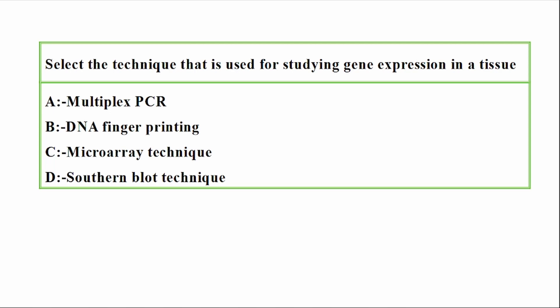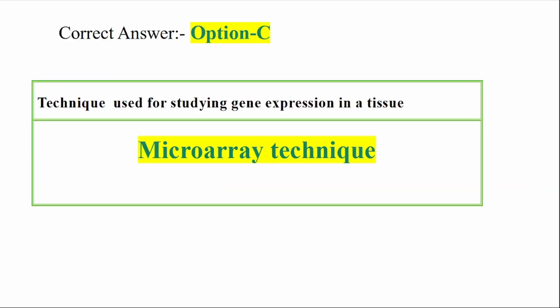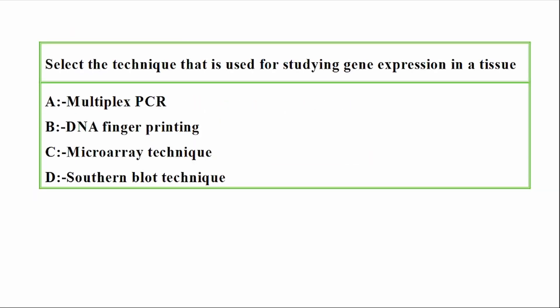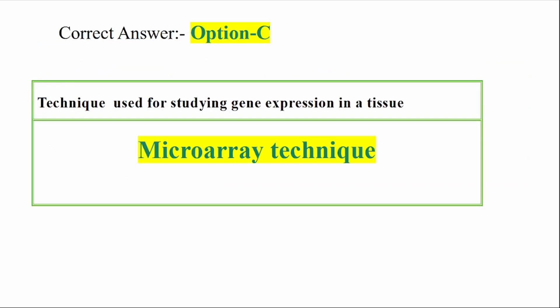Question: Select the technique used for studying gene expression in a tissue. Options: A — Multiplex PCR, B — DNA fingerprinting, C — Microarray technique, D — Southern blot technique. Correct answer: Option C — Microarray technique. The technique used for studying gene expression in a tissue is the Microarray technique.